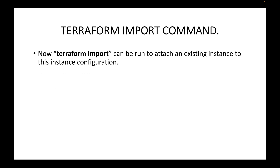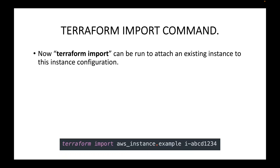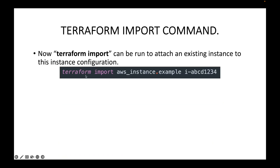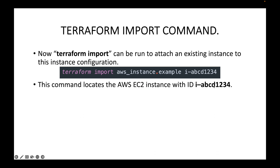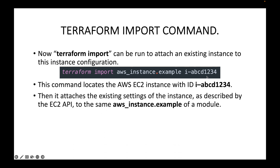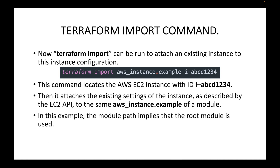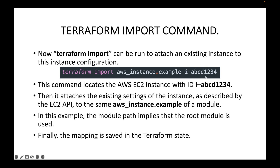Terraform import can be run to attach an existing instance to this resource block configuration. For example, you run: terraform import, then the resource type dot the local name, and then the resource ID you want to import. This command locates the AWS EC2 instance with the respective ID and attaches the existing instance as described by the EC2 API to the resource block in your configuration. The mapping is then saved to the Terraform state file.